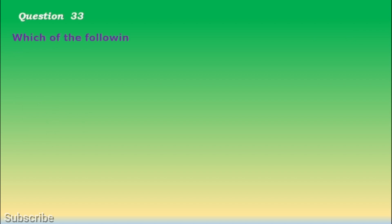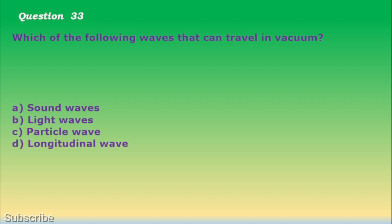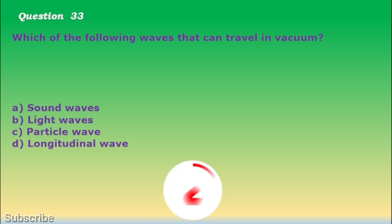Question number 33. Which of the following waves can travel in vacuum? a. Sound waves, b. Light waves, c. Particle wave, d. Longitudinal wave. The correct answer is letter b. Light waves.